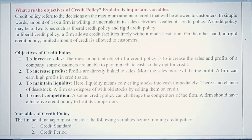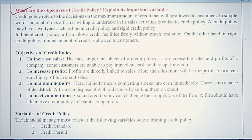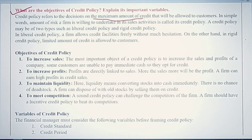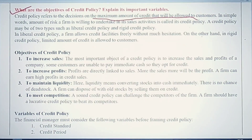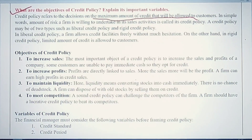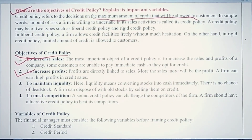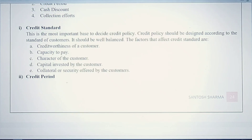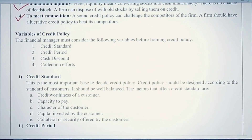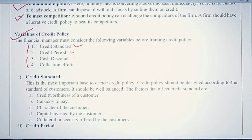The first question is: what are the objectives of credit policy, and explain the important variables of credit policy? When we talk about credit policy, it is the maximum amount of credit that will be allowed to a customer. Every company has to decide how much credit it can offer so that the cash inflow and outflow is not disturbed. The main objectives include: to increase sales, to increase profits, to maintain liquidity of cash, and to meet competition — because if competitors offer credit facilities, the firm must also do so to sustain in the market.